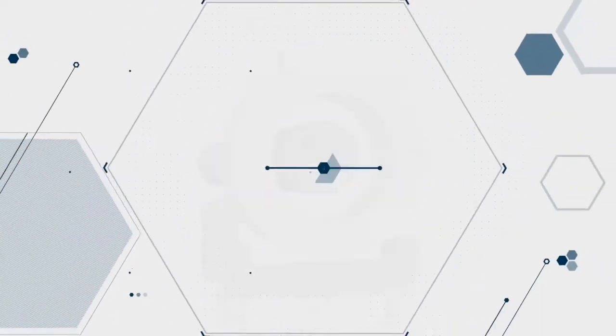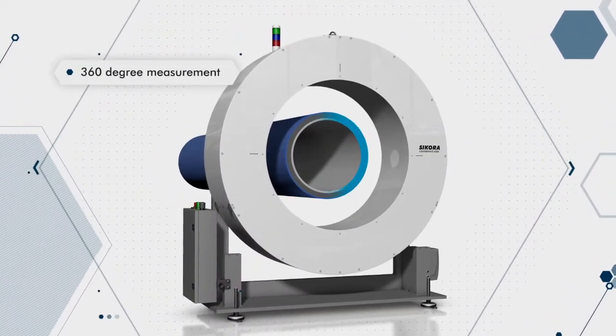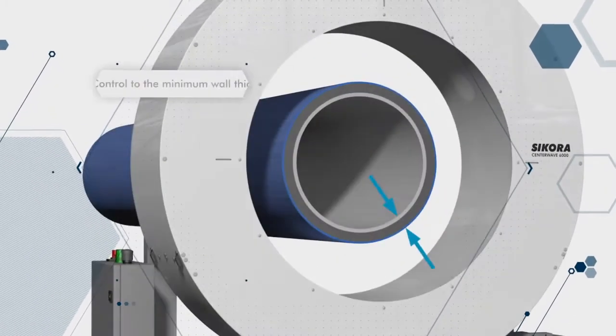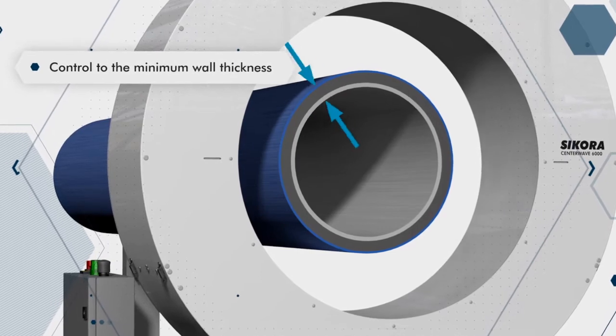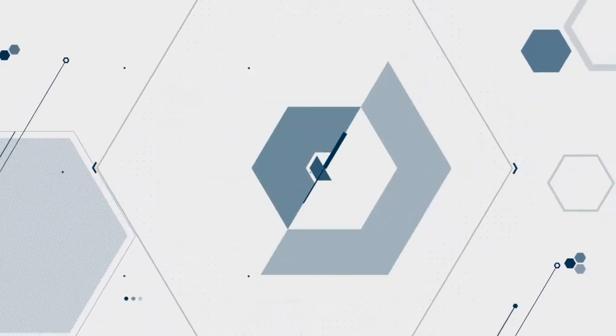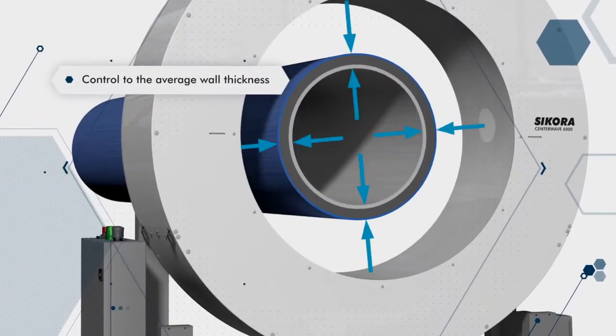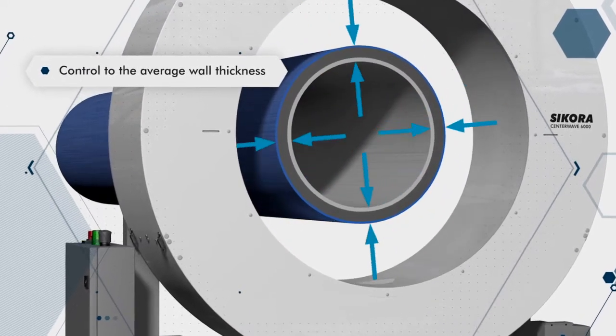The real-time measurement also allows for reliable line control. For maximum material savings, automatic control to the minimum wall thickness is available. The control to the average value of the wall thickness is realized by the output of the extruder or the line speed.